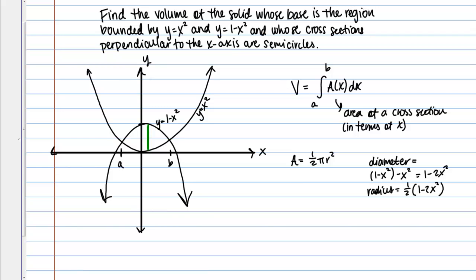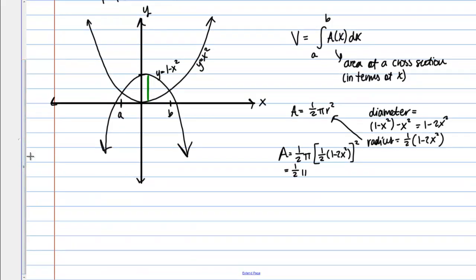So now I can finish writing my expression for the area using the radius I just found. So area of a semicircle is 1 half pi R squared, and my R is this 1 half times the radius, 1 half times 1 minus 2X squared, and I'm squaring that entire quantity. So let's clean that up just a tad. So that's going to be 1 half times pi times 1 fourth times the quantity 1 minus 2X squared squared. Or I can write that as pi over 8 times 1 minus 2X squared quantity squared.